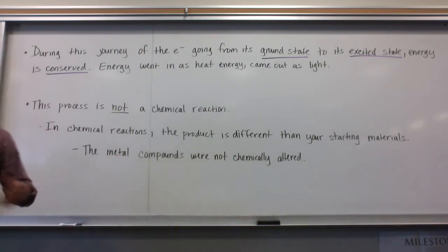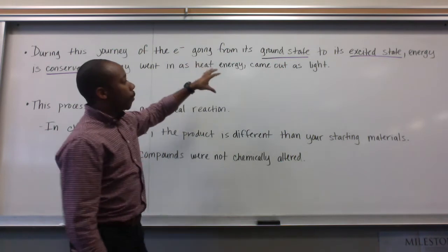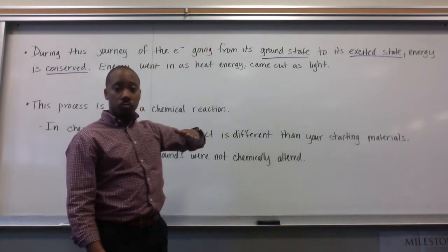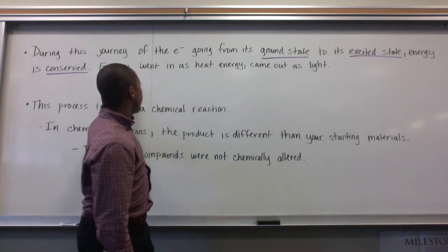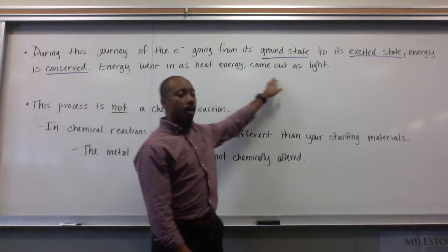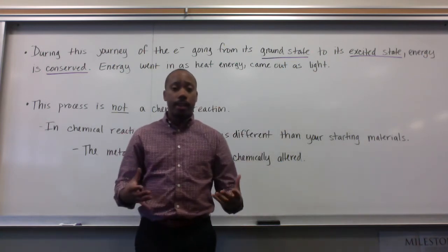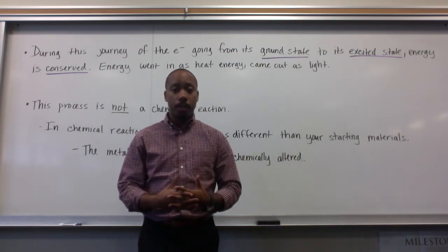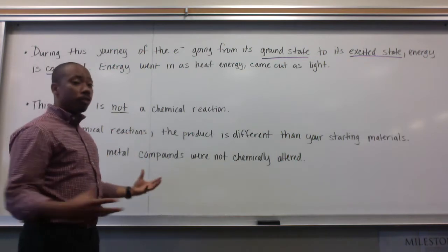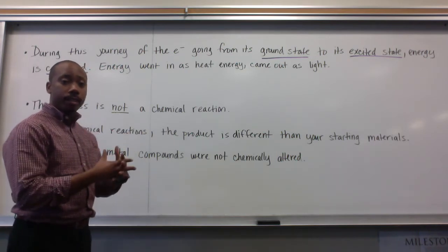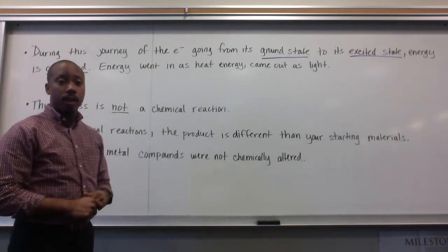During this journey of the electron — symbolized as E⁻ — going from its ground state to the excited state, energy is conserved. Energy went in as heat and came out as light. Those who took physics know about the conservation of energy: energy can't be created or destroyed, it's just transformed. This is a case of that happening in chemistry — we put heat energy in through fire, and it came out as light once the electron came back down to its ground state.